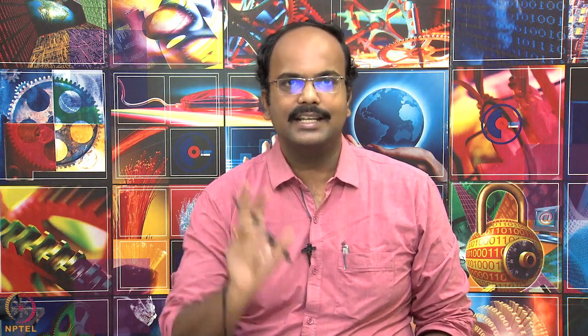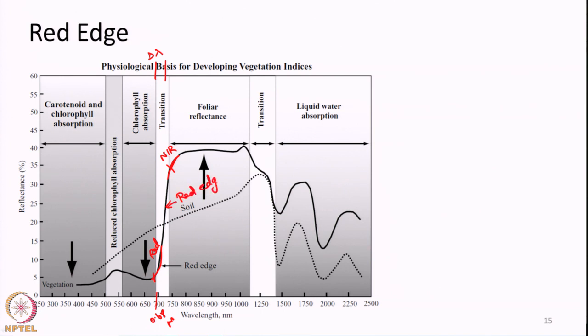Today we are going to be introduced to the concept of what is known as the red edge. The red edge is defined as the transition portion where reflectance suddenly increases. Looking at the spectral reflectance curve of vegetation, around the 0.68 micrometer range the reflectance suddenly increases to a very high value. There is a small transition zone — a short bandwidth — where this transition occurs from very low reflectance in the red portion to very high reflectance in the NIR portion. This transition zone is called the red edge.